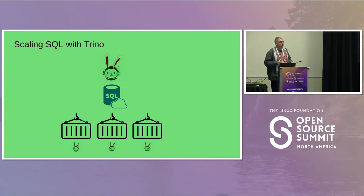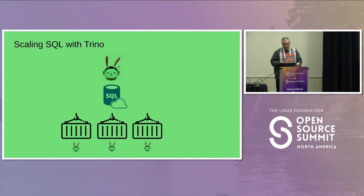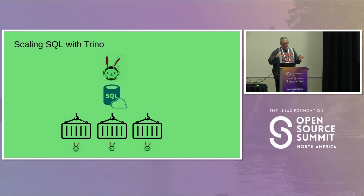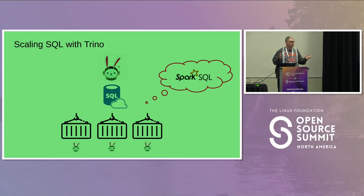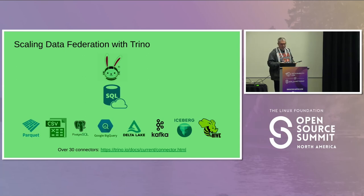I want to talk about Trino because it's one of the core tools of the federation. Trino takes SQL and under the hood runs containerized workers in parallel. When you execute a SQL command, the execution can happen in parallel to speed things up. Anybody who's worked with Spark might recognize that as being similar to Spark SQL — Trino operates in that same general space.